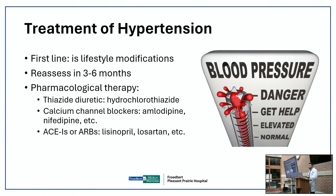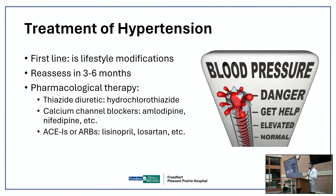First-line medications include a diuretic like hydrochlorothiazide, calcium channel blockers like amlodipine or nifedipine — which are safe for kidney disease — and ACE inhibitors or ARBs like lisinopril, given to patients with coronary heart disease, heart failure, or mild kidney disease. Every patient is different. Once you're on three medications, you enter the category of resistant hypertension, and we look for underlying causes like renal artery stenosis or abnormal hormone secretion.